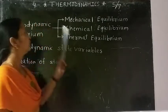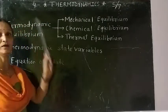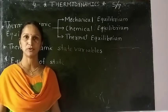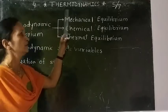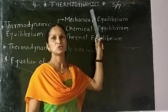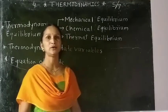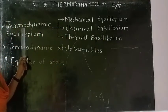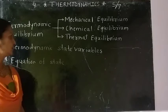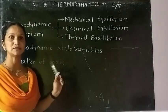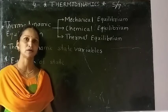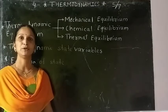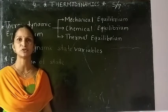Friends, this is the fourth topic from physics section 1, HSC board. The topic is thermodynamics. In this topic, today we are going to see thermodynamic equilibrium, thermodynamic state variables, equation of state, PV diagrams, and work done during the thermodynamic process.